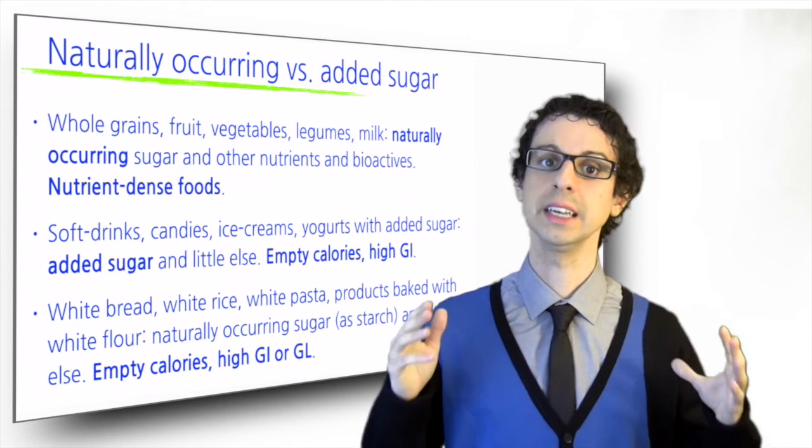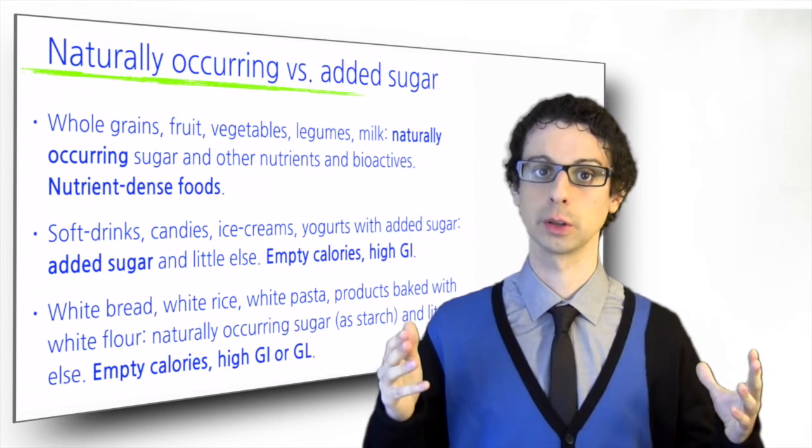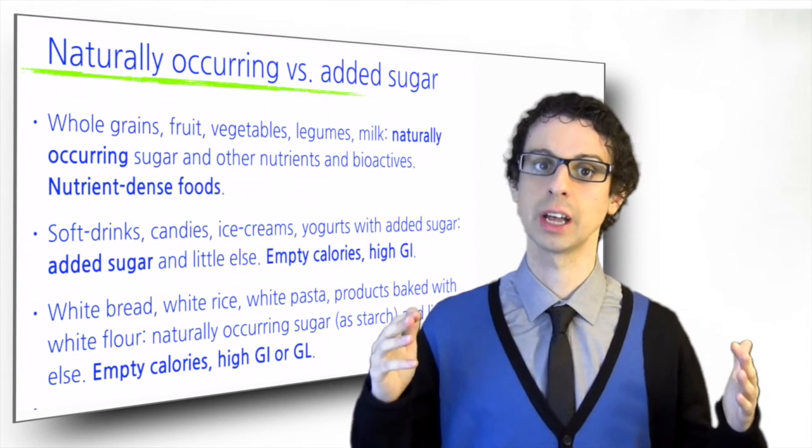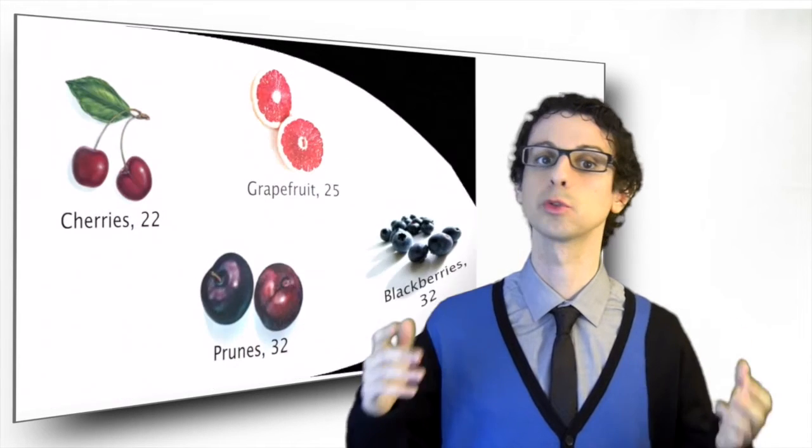Let's now have a look at the glycemic index of some foods, which as we learn is a key information to go with the total carb content. Fruit, although generally sugary, has a medium or low GI because the prevailing sugar is fructose.